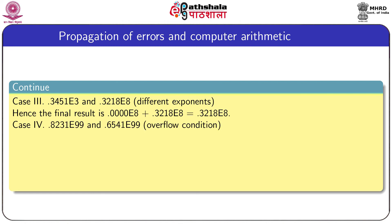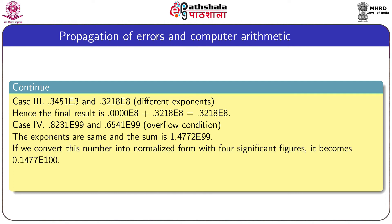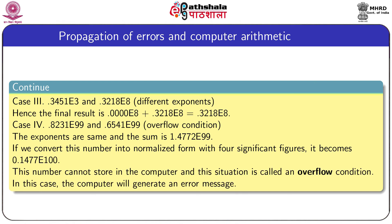Case 4 is very interesting. Two numbers with the same exponent 99 are added, giving a mantissa of 1.4772 e99. To represent the mantissa in 4 significant digits, digit 2 is discarded, the mantissa is adjusted, and the exponent becomes 100. However, if the machine does not support exponents greater than 99, this number cannot be stored — this situation is called an overflow condition, and the computer generates an overflow error message.